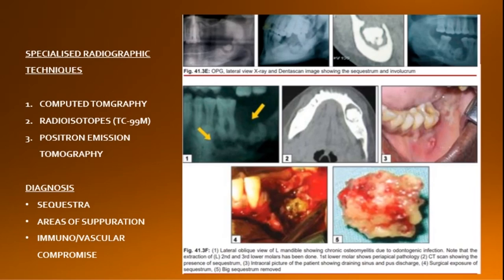After obtaining clinical and radiographic findings, diagnosis of osteomyelitis is made on the basis of presence of sequestrum, areas of separation involving the tooth-bearing area of the jaw bone, and regional or systemic compromise of immune response as well as microvascular decompensation of the area. The management of osteomyelitis will be discussed in the upcoming lecture.